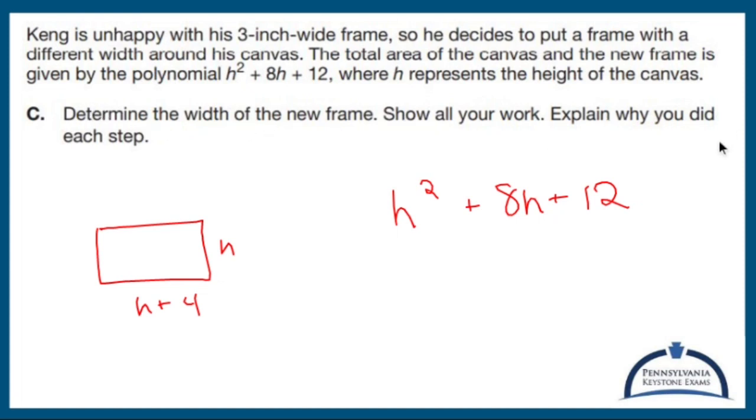Determine the width of the new frame. Show all your work and explain why you did each step. Well, step number one, I'm going to factor. This becomes h. So I need to come up with two numbers that add up to 8, multiply out to 12, and that gives me 6 and 2.